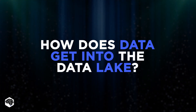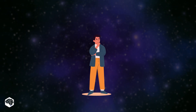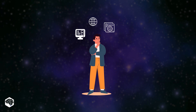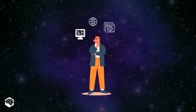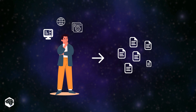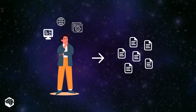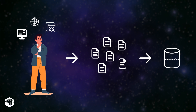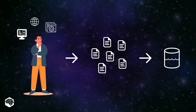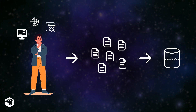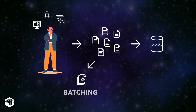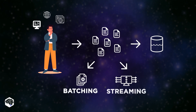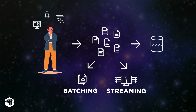How does data get into the data lake? Business analysts or data scientists start by identifying significant or interesting data sources. They then replicate data from selected sources into a data lake with little or no structural, organizational, or formatting changes. Data arrives in two ways: batching, which means loading at intervals, and streaming, meaning a continuous data stream.